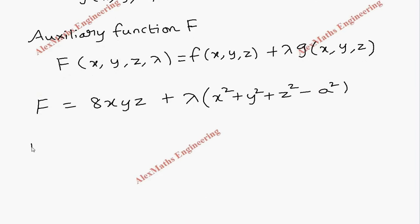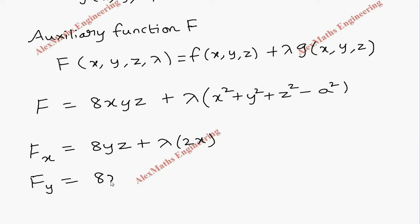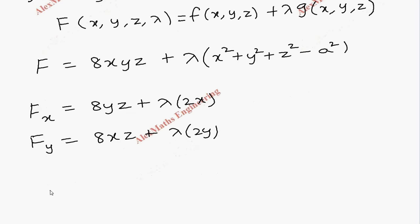Now we find the partial derivatives. The partial derivative with respect to x is 8yz + λ(2x). The partial derivative with respect to y is 8xz + λ(2y). The partial derivative with respect to z is 8xy + λ(2z).